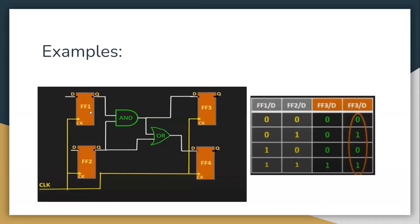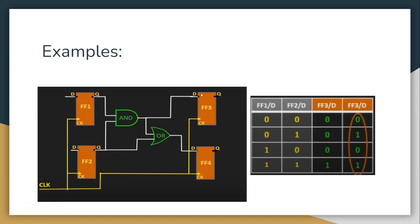In this example, there are four flip-flops: flip-flop 1, 2, 3, and 4. Let's look at the output of flip-flop 3. As we know, whatever the input to D is, that will be the output of flip-flop 3. The D input is coming from the AND gate of the outputs of flip-flop 1 and flip-flop 2.